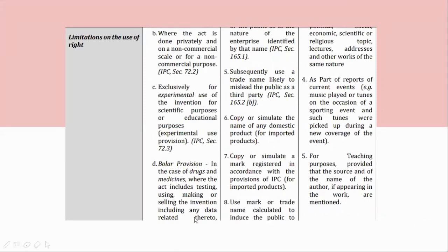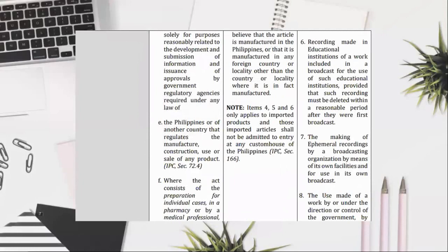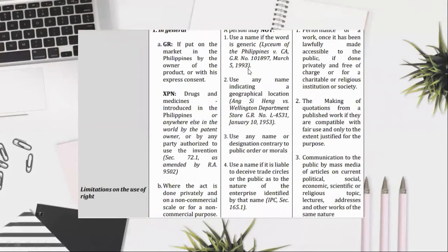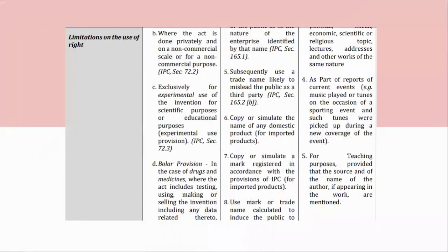A person may not: (1) use a name if the word is generic — Lyceum of the Philippines v. CA, GR No. 101-1897, March 5, 1993; (2) use any name indicating a geographical location — Angus I. Hong vs. Wellington Department Store, GR No. 4531, January 10, 1953; (3) use any name or designation contrary to public order or morals; (4) use a name if it is liable to deceive trade circles or the public as to the nature of the enterprise identified by that name, IPC Section 165.1; (5) subsequently use a trade name likely to mislead the public as a third party, IPC Section 165.2b.